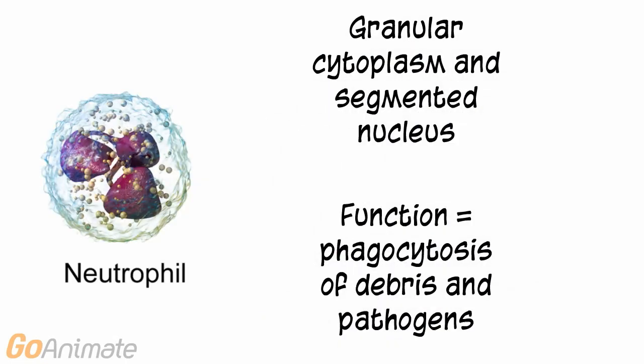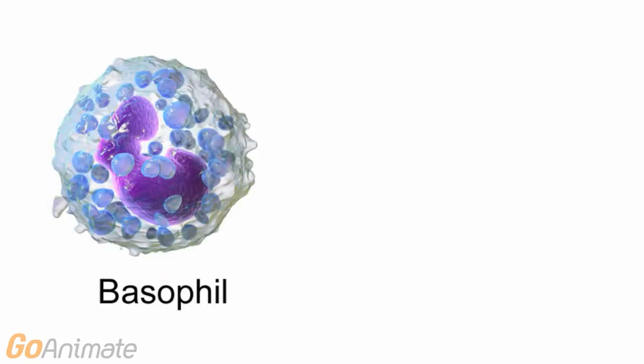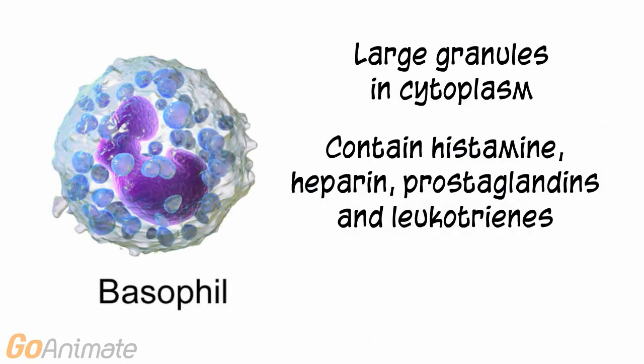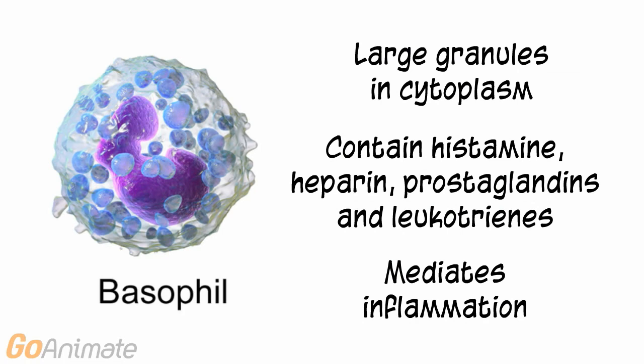The neutrophil has a granular cytoplasm and segmented nucleus. Its function is the phagocytosis of debris and pathogens. The basophil contains large granules in the cytoplasm. These granules contain substances that promote inflammation, which include histamine, heparin, prostaglandins, and leukotrienes.